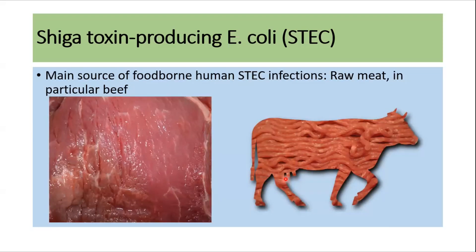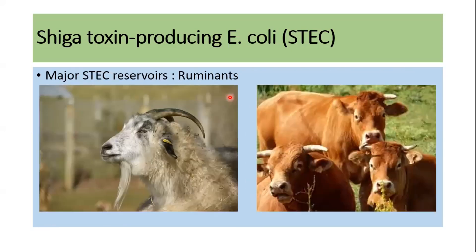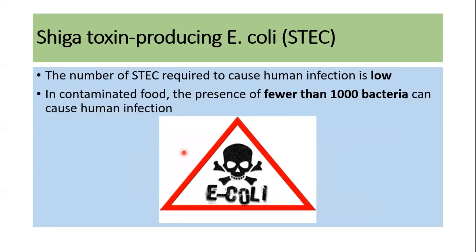The main source of foodborne human Shiga toxin-producing E. coli infection is raw meat, primarily beef. The reservoirs are usually ruminants like cattle and goats. This pathogen is capable of causing multiple outbreaks because the number of bacteria required to cause human infection is very low — fewer than one thousand bacteria can cause infection.